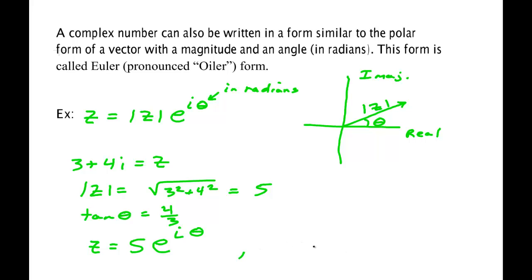So as examples, z1 might be 3e to the i pi over 2. That particular one would be 3 units high, and this angle here would be pi over 2. So, notice it's a length and an angle. This is the so-called Euler form, e-u-l-e-r after the famous mathematician and physicist.